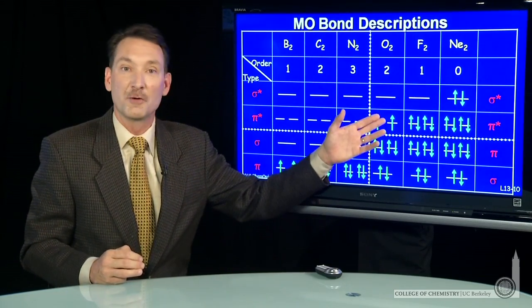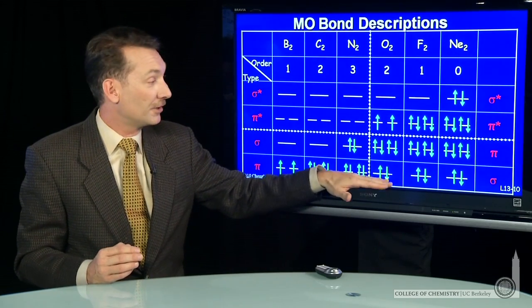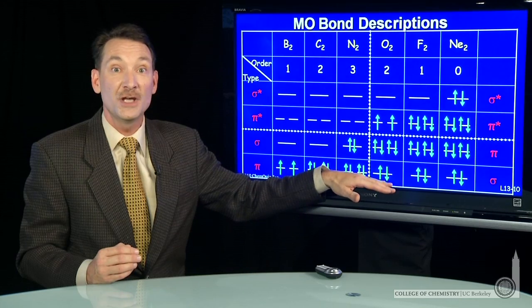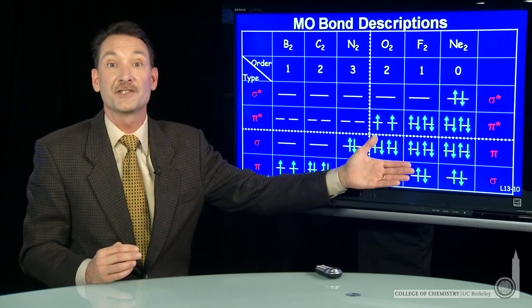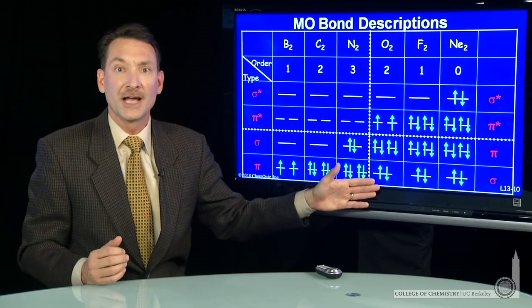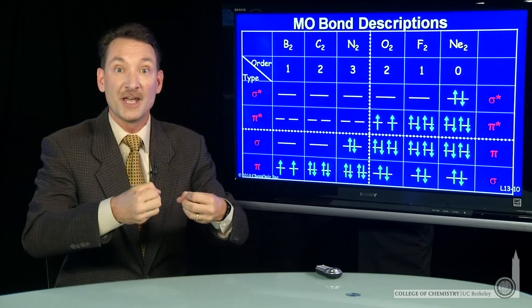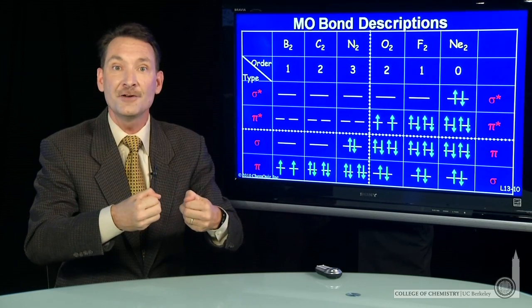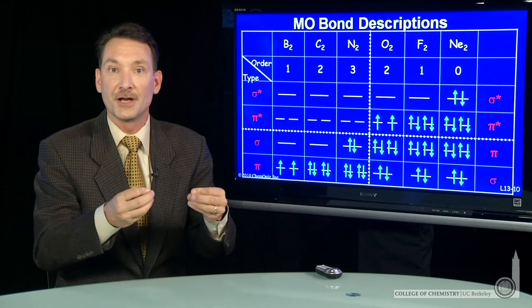Oxygen, we would predict, would be paramagnetic from this. Now, as we go across the periodic table, the lower energy orbitals are going to switch here. The sigma bonding orbital becomes the lower energy as I go across the periodic table. And you might predict that. These molecular orbitals are formed from linear combinations of atomic orbitals.